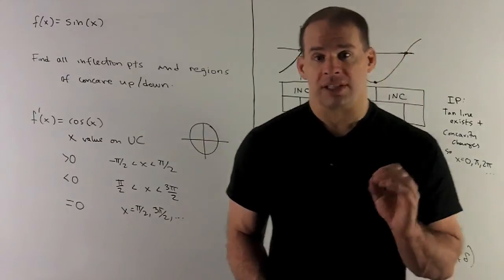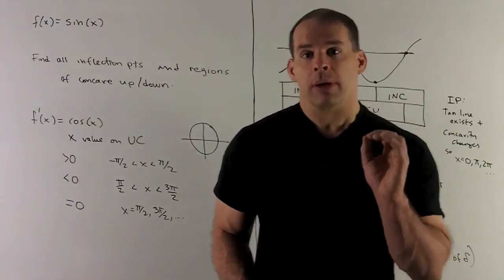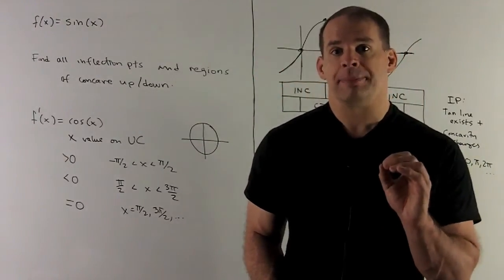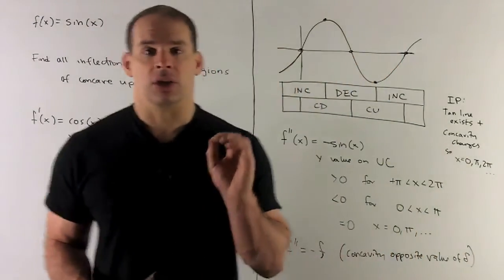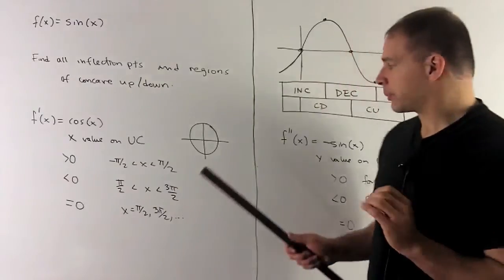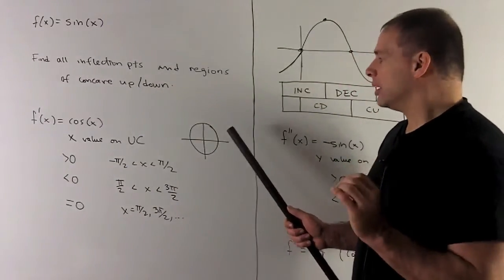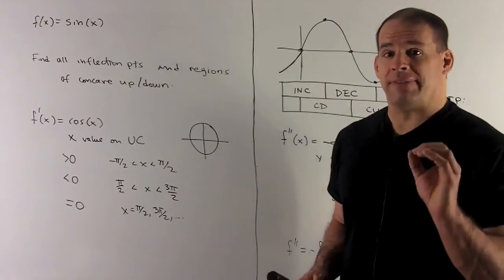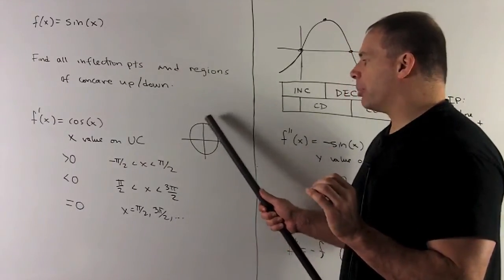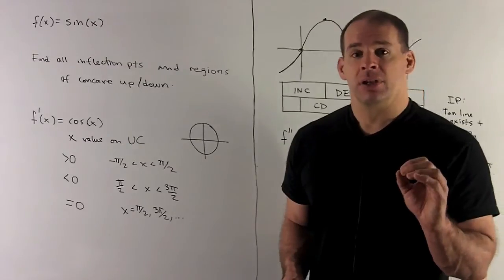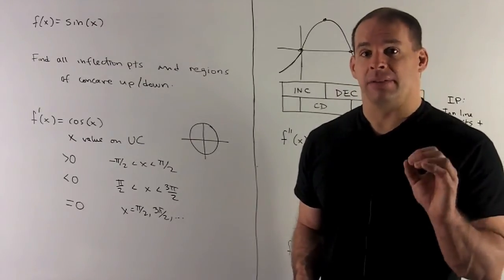Next, we want to take the second derivative. So I'm going to want the derivative of cosine, that's going to be minus sine. Let's take a look at our unit circle. So, remember, sine is going to be given by the y value in the unit circle. So if I'm between zero and pi, the sine is going to be positive, so that's going to mean the derivative is negative.